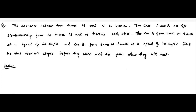Here is another question on relative velocity. It has been given that the distance between two towns M and N is 400 kilometers. Two cars A and B start simultaneously from towns M and N respectively towards each other. Car A from town M is travelling at a speed of 60 kilometers per hour and car B from town N is moving at a speed of 40 kilometers per hour. Find the time that will elapse before they meet and the location where they will meet.